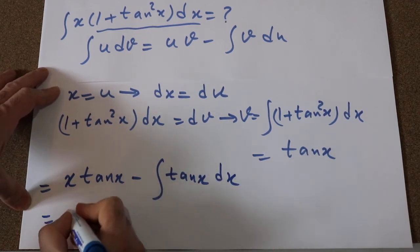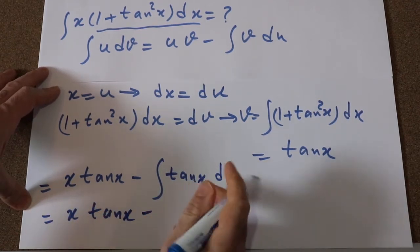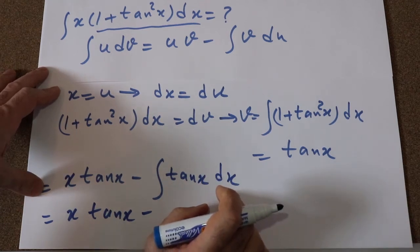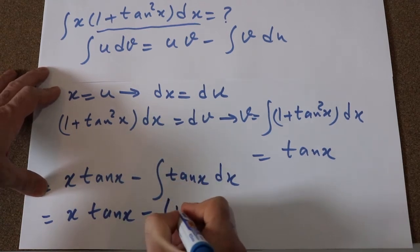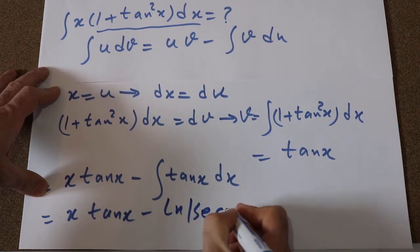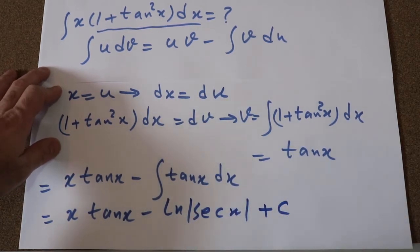Which is equal to x tangent x minus integral of tangent x dx. From table of integral, we know that that is equal to ln secant x, plus c, which is the constant of the integral.